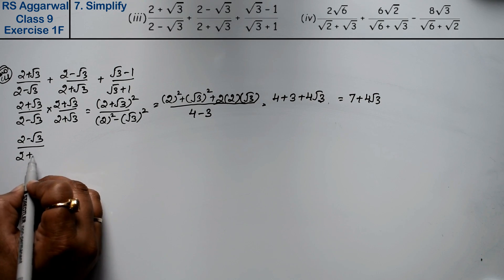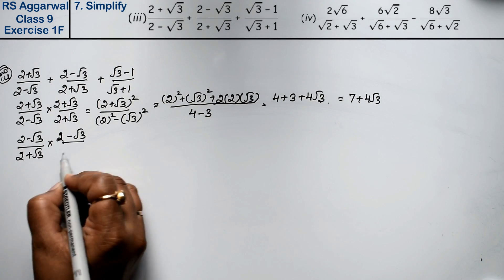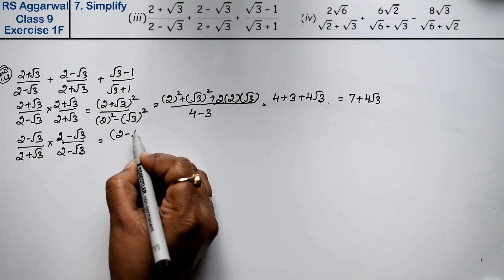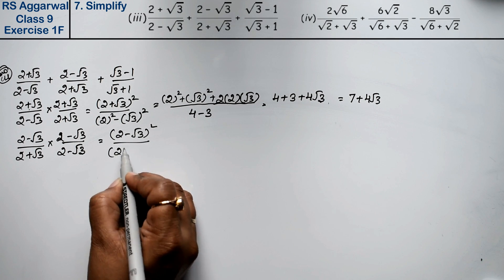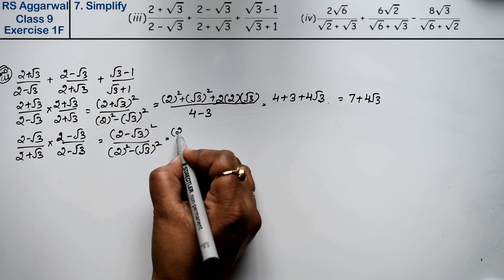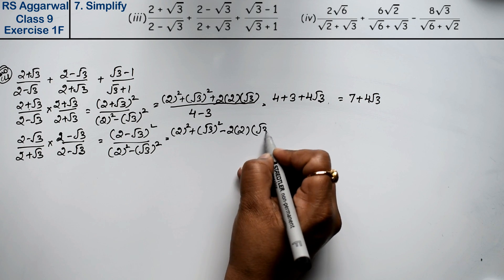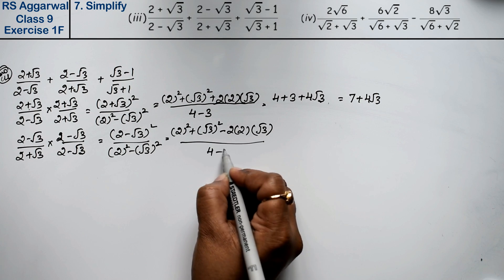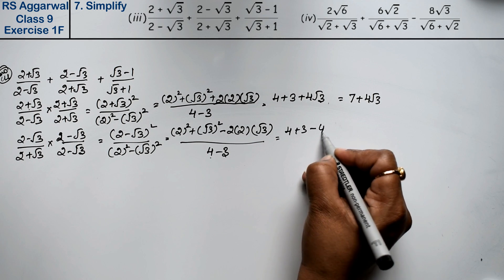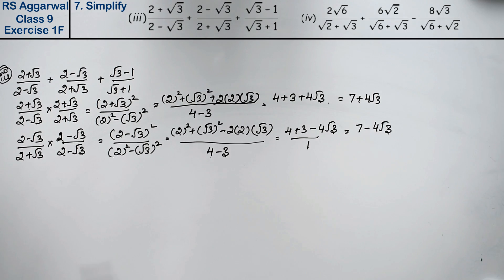For the second fraction (2 - √3)/(2 + √3), we rationalize by multiplying by (2 - √3)/(2 - √3). The numerator is (2 - √3)² = a² + b² - 2ab = 4 + 3 - 4√3 = 7 - 4√3, over 4 - 3 = 1. So the second fraction is 7 - 4√3.